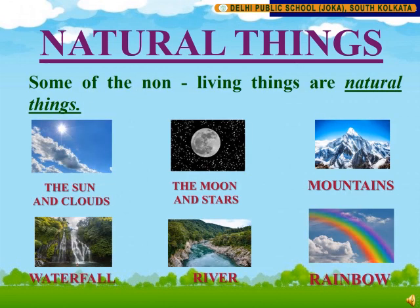Some of the non-living things are also natural things. The sun and clouds, the moon and stars, mountains, waterfalls, river, and rainbow are also natural things.